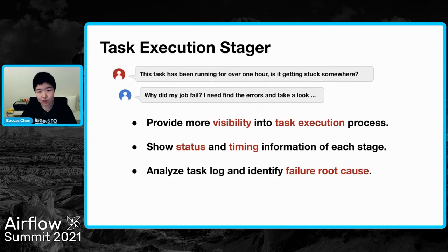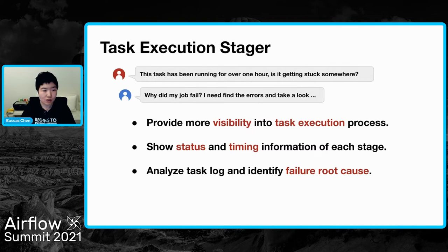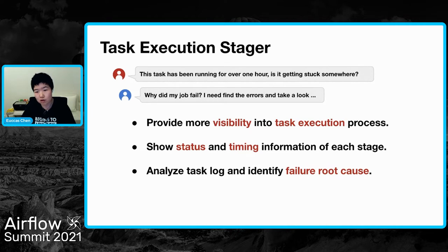Now let's jump into another feature we created as part of the debugging tooling — the task execution stager. The goal here is to provide visibility into the task execution process with finer granularity. As mentioned, when a task instance is running it may have dependencies on multiple third-party compute platforms, and there could be different issues happening on those platforms. This task execution stager helps users understand the status and timing when their task runs into different stages. This feature also comes with the failure error analyzer to analyze the task logs and find the root cause when a task fails.